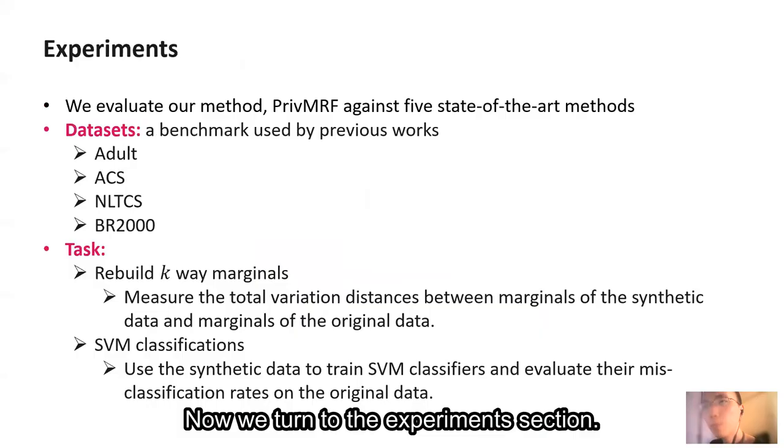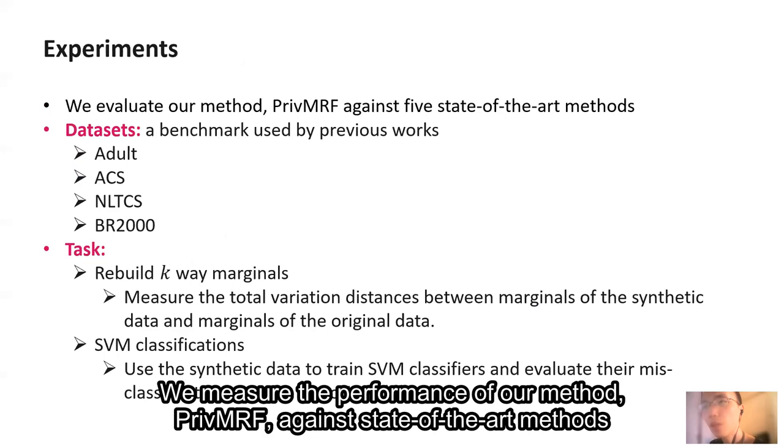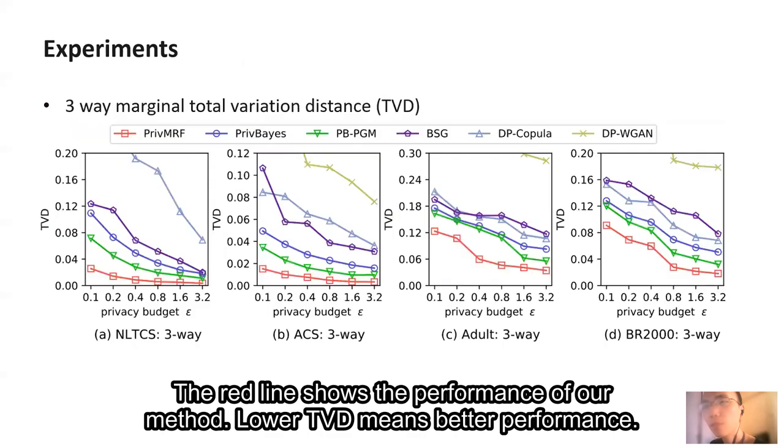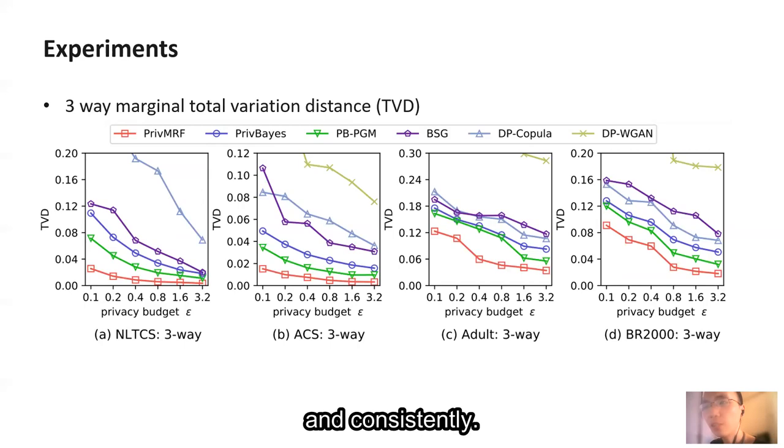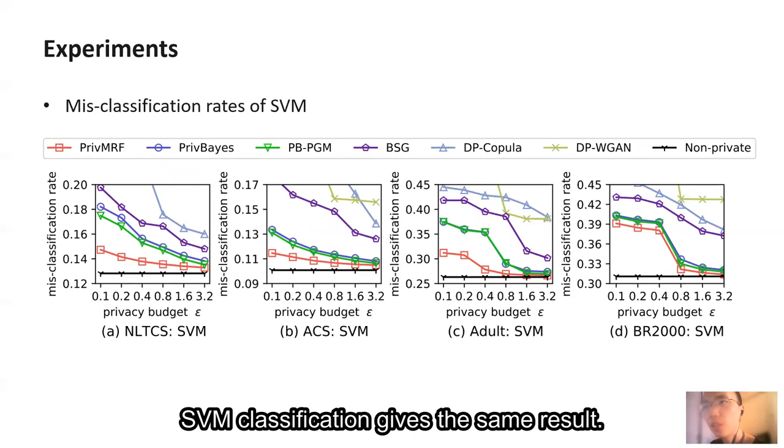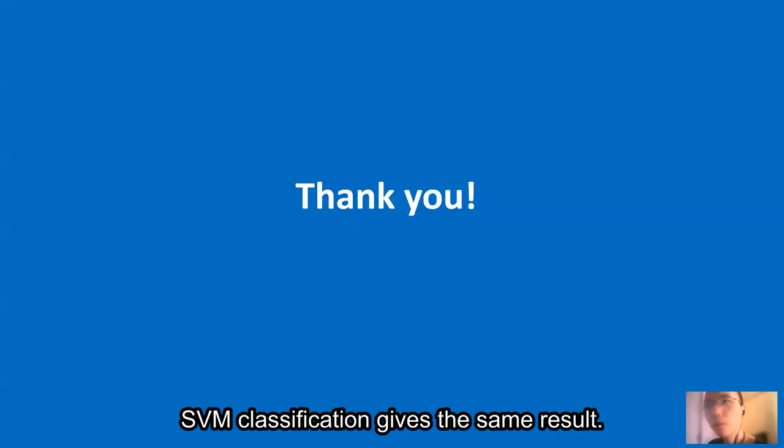Now we turn to the experiments section. We measure the performance of our method, PrivMRF, against state-of-the-art methods. The right line shows the performance of our method. Lower TVD means better performance. It can be seen that our method outperforms existing methods with a large margin significantly and consistently. SWAM classification gives the same result. Thank you.